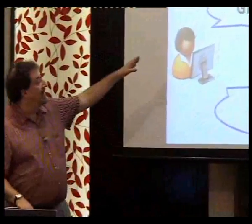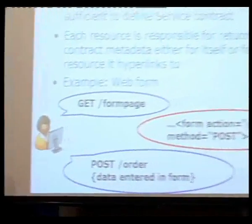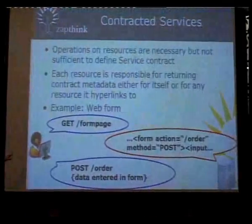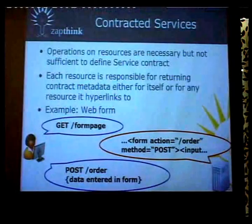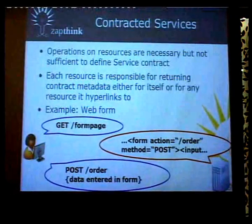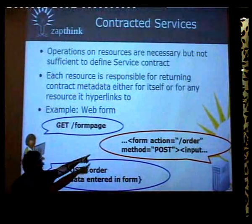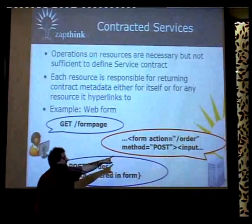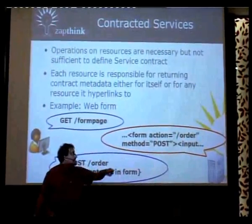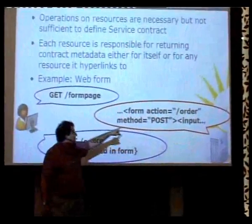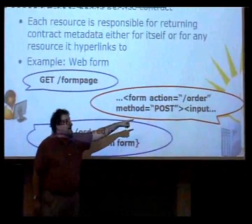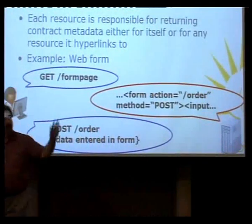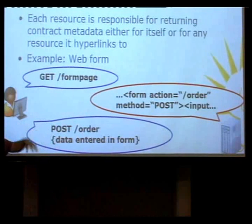Here's an example. If a client gets a page that has a form on it, the server sends a page with a form. There's a form tag — HTML — it has an action, which is the hyperlink, and a method, which is the operation, and then a bunch of form fields — input, text area, etc. So what can the client do now with that web page? They can fill in the form and submit it.